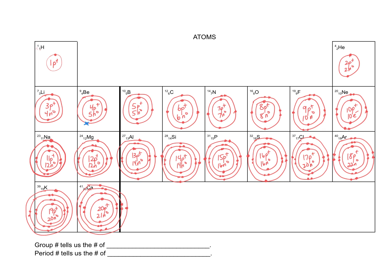Seventeen electrons match the seventeen protons for the chlorine atom: two plus eight is ten, plus seven is seventeen. Eighteen protons needs eighteen electrons in the neutral argon atom: two plus eight plus another eight gives us eighteen. When you get down to potassium, with nineteen protons you need to go to a fourth orbit — draw a fourth one with one electron, the nineteenth. Calcium has twenty electrons: two, eight, eight, and then two more makes twenty.